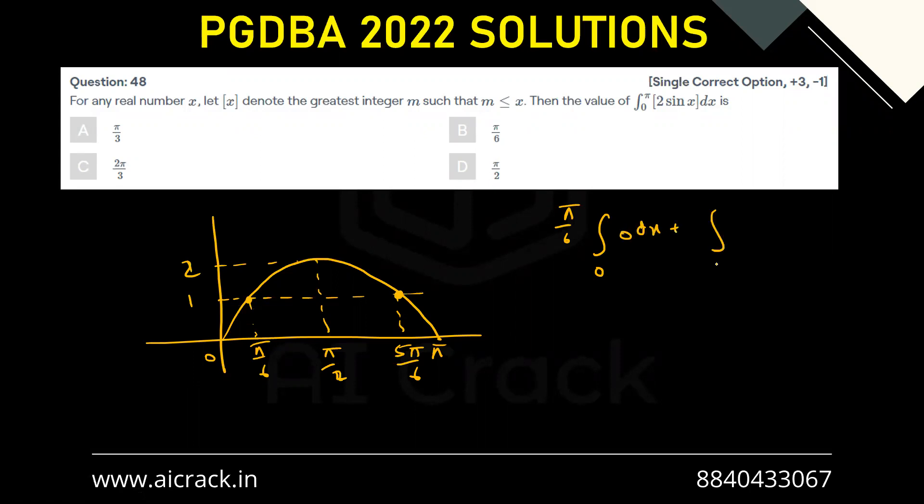From π by 6 to 5π by 6, the function value is lying between 1 to 2, so GIF function would be 1 dx.